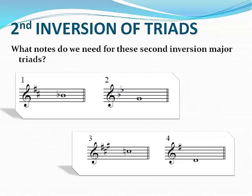Now let's form these second inversion major triads. Because these triads are in second inversion, the given note is the fifth of the triad. We need to find the root position so we can name the triad. We'll begin by going down a perfect fifth from B-flat. A perfect fifth below B-flat is E-flat. E-flat would be the root of the chord. We now need a major third from E-flat in order to make this a major triad — that means the third of the triad would be G. Above the B-flat, we would write E-flat. Remember, E-flat is the root of the chord. Above E-flat, we would write a G. G is the third of the chord.